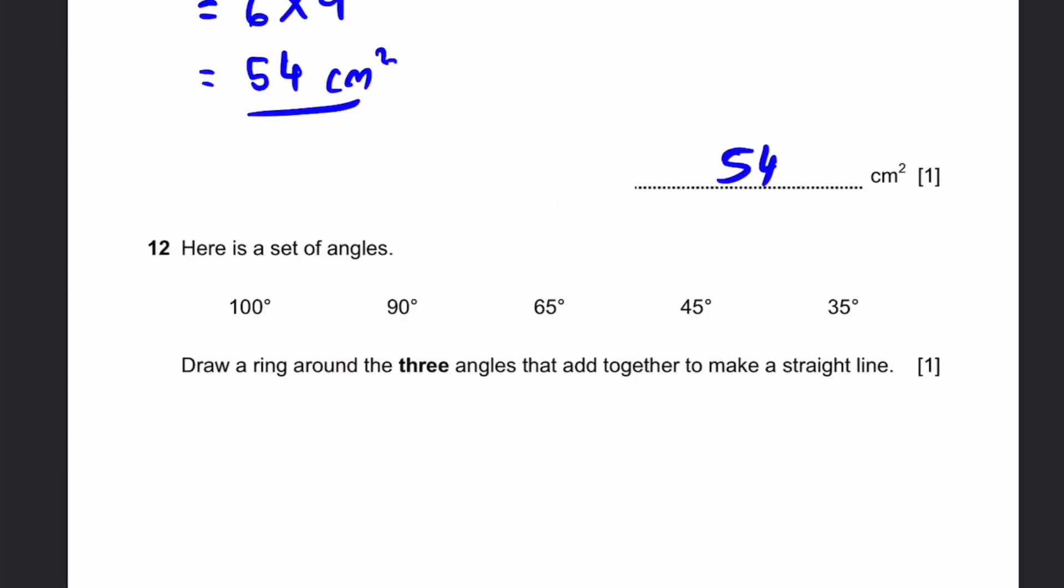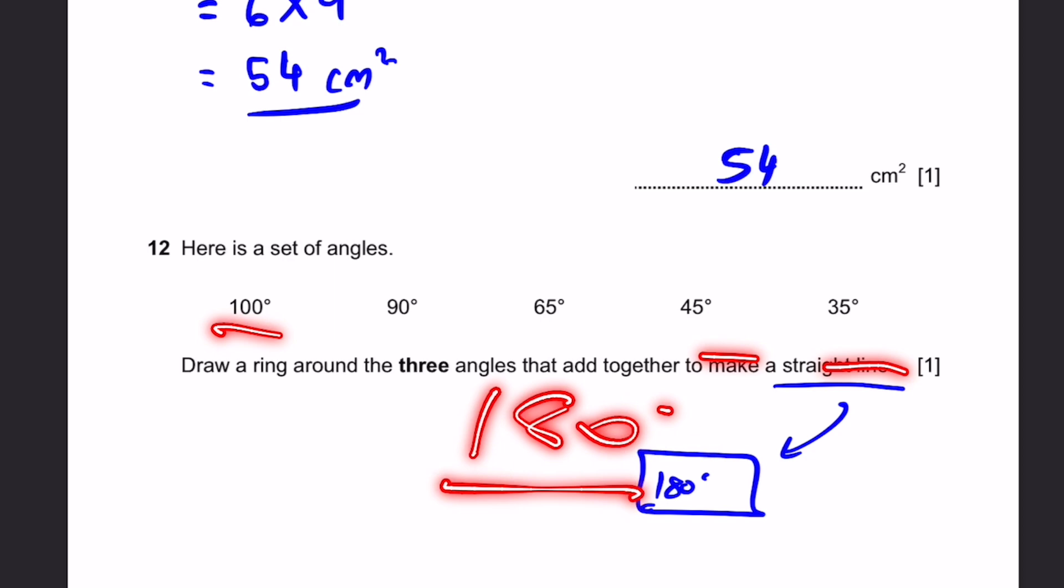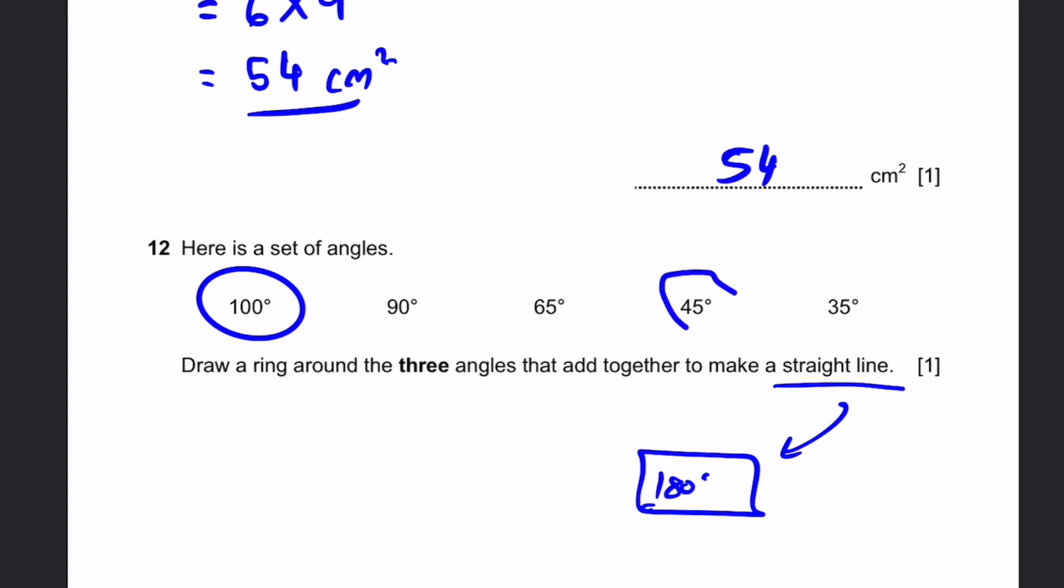Question 12. Here is a set of angles. Draw a ring around the three angles that add together to make a straight line. So, angles on a straight line add up to 180 degrees. And using this property, we have to basically circle or draw a ring around three angles that add together to make 180 degrees. So, we can take 100, 45 and 35 degrees. Adding these three up is 180 degrees. Therefore, these three angles are the answer. In case you're wondering, there's no alternate answer for this. These three is the only answer which you can choose.